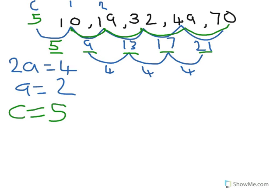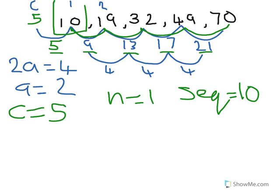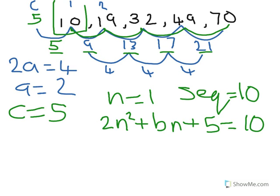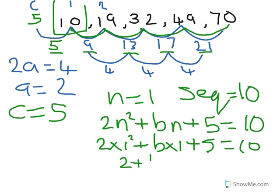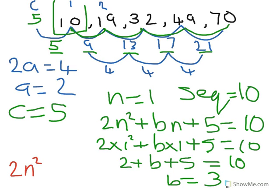Now to find B — we use this piece of information. When N is 1, the sequence is 10, so it equals 10. I know that 2n squared plus B times n plus C, which is 5, equals 10 when n is 1. So that is 2 times 1 squared, plus B times 1, which is B, plus 5, equals 10. So we've got 2 plus B plus 5 equals 10. Rearranging, you get B equals 3. Make sure you write your final answer: a is 2, so it's 2n squared plus 3n plus 5.